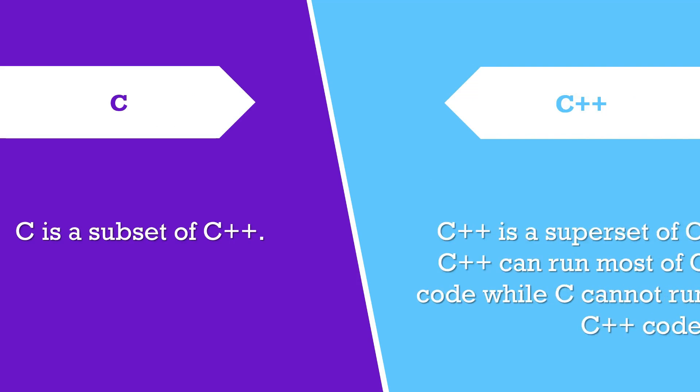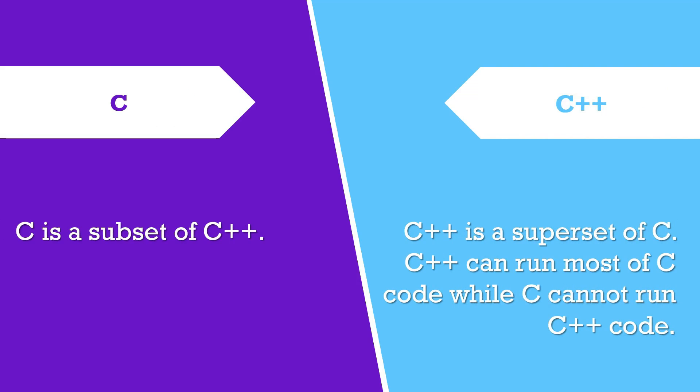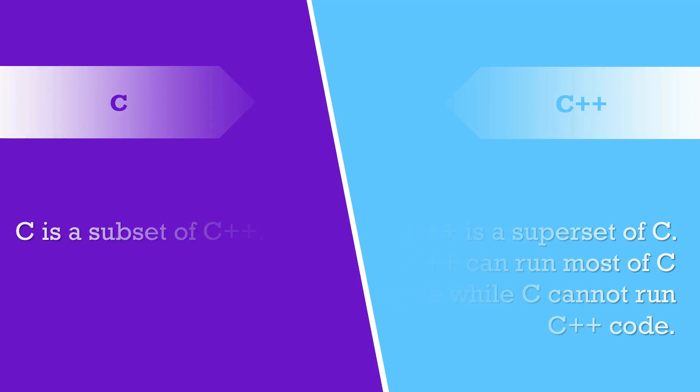C is a subset of C++. C++ is a superset of C. C++ can run most of C code while C cannot run C++ code.